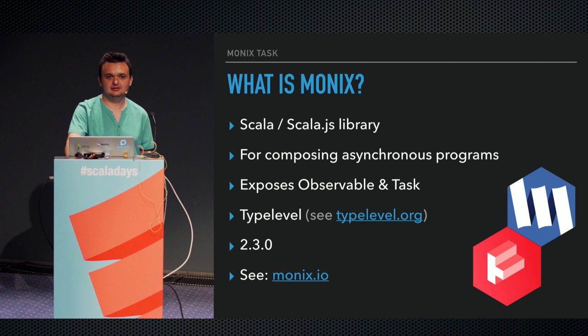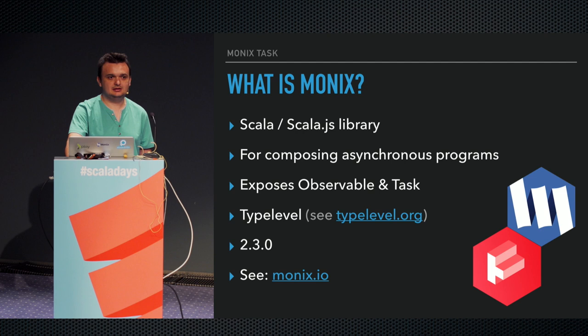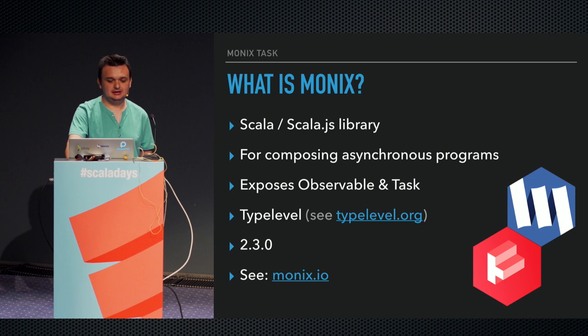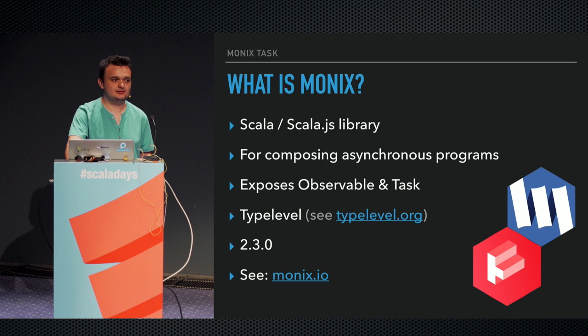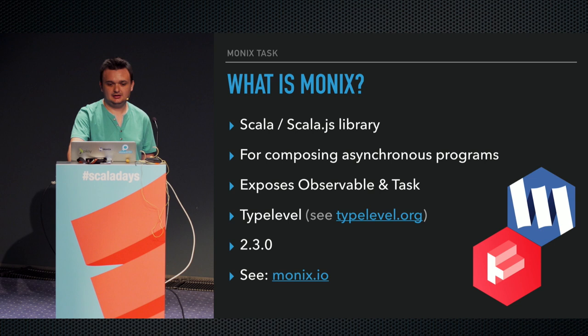It's about composing asynchronous programs — that's how I like to describe it. It exposes Observable and Task. It's a type-level project with full membership, meaning it adheres to certain standards of quality. Currently it's version 2.3, and I hope version 3 will happen soon. Monix.io is the address of the website.